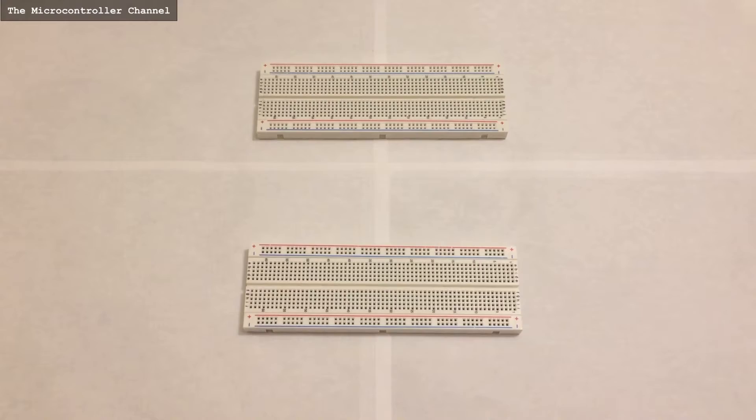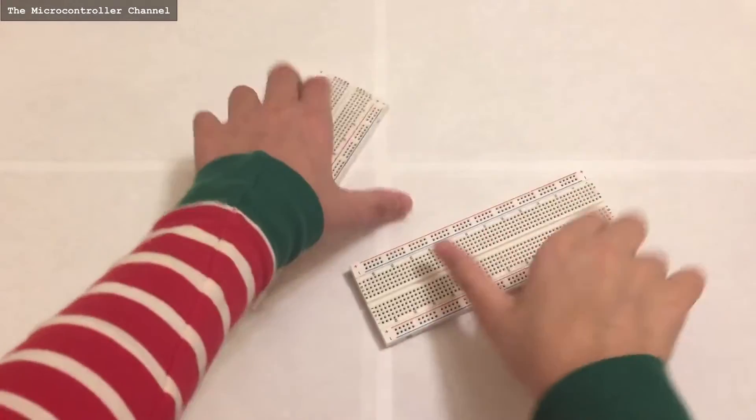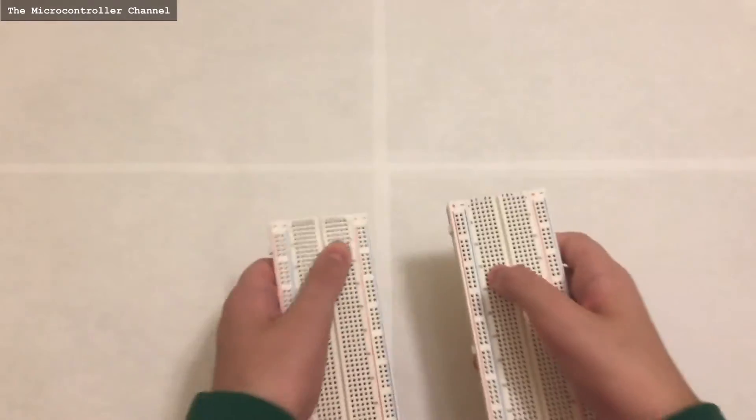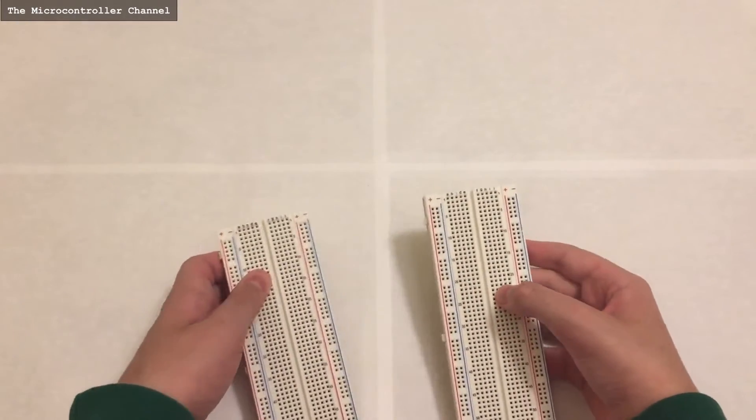If you have more than one breadboard and if you line them up like this, you will see that they have square ridges on the side. Now the way to put these breadboards together is not very obvious.